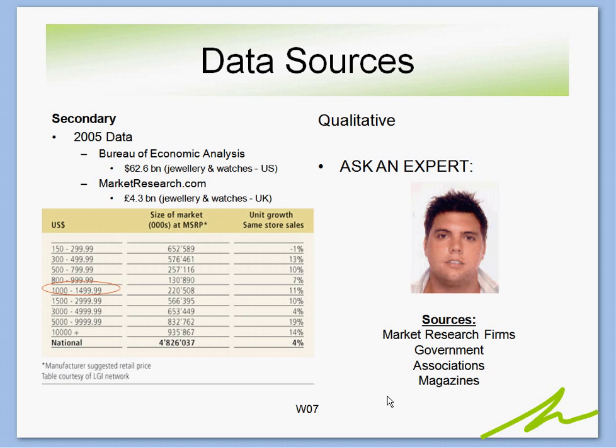Once you've decided to go down the market research route, you want to come up with both primary and secondary sources of data. Your primary sources will often be consumer research where you survey statistically sizable samples of the target market population — in this case, probably several hundred men from that 1.5 million identified as having the wealth to buy $600 watches. You'd need a market research firm or internal team to put together a valid and reliable survey that is statistically significant to yield meaningful data.